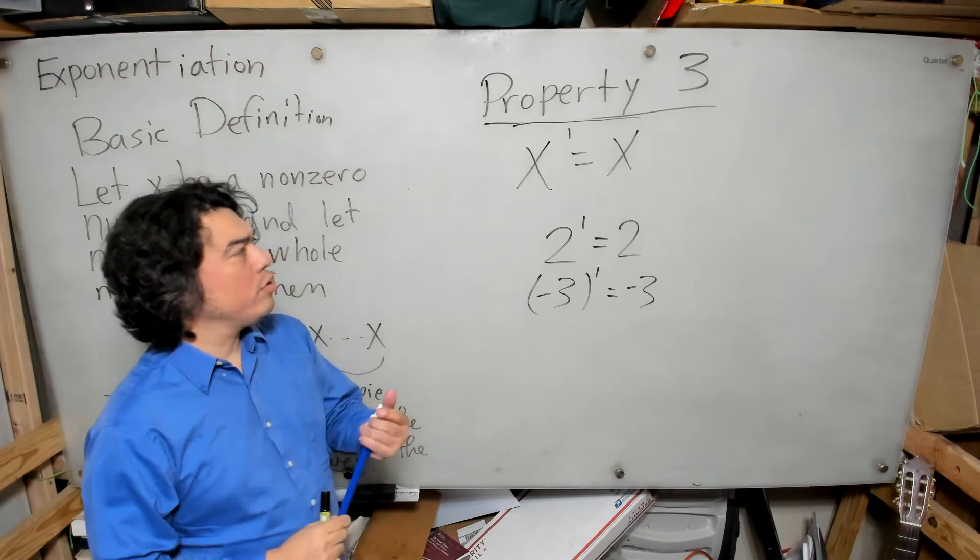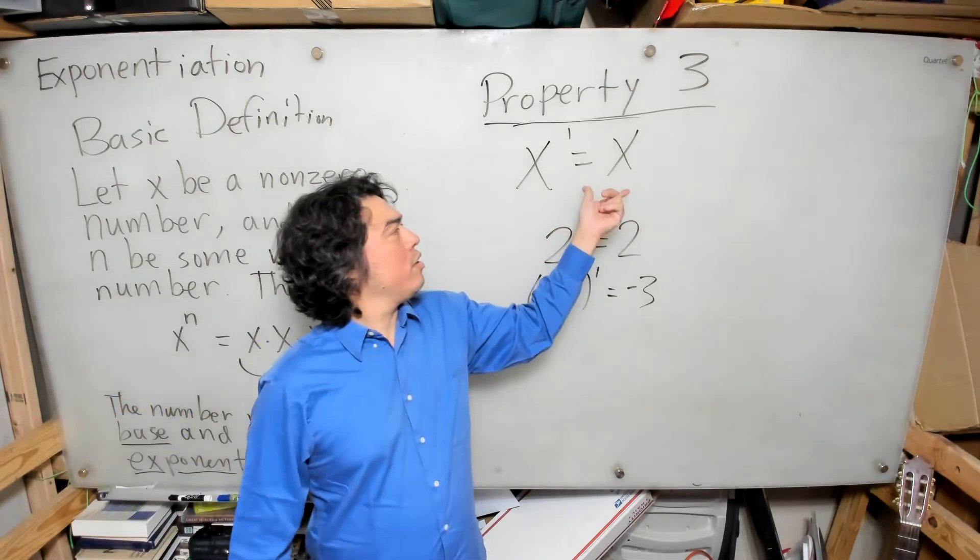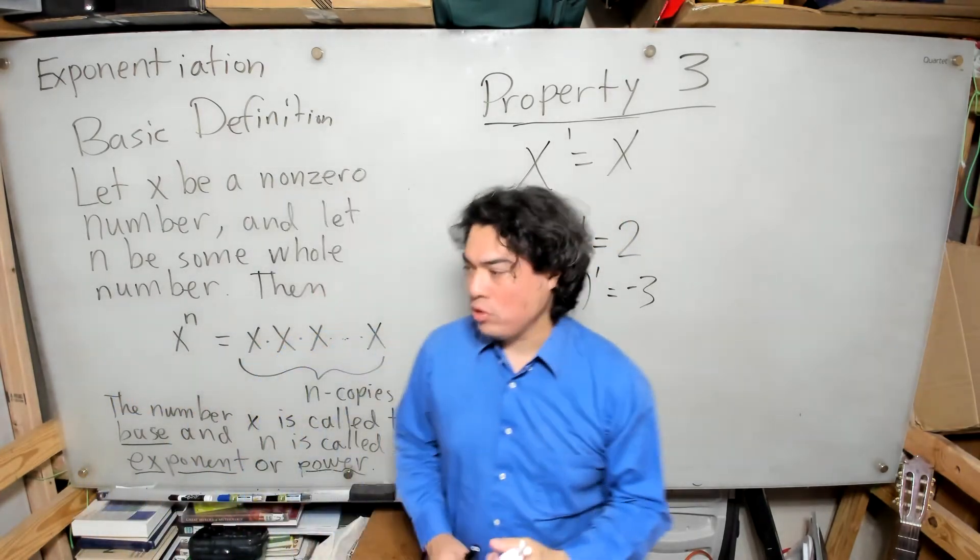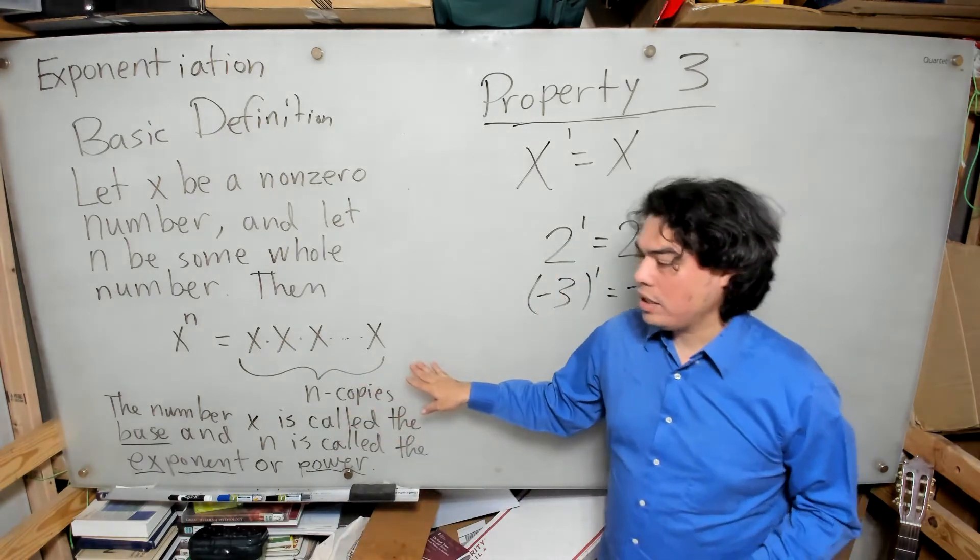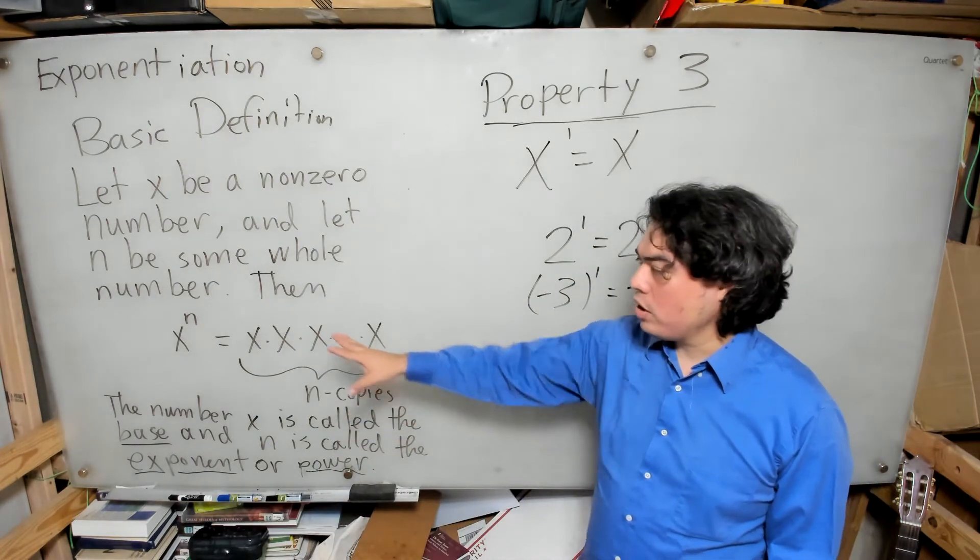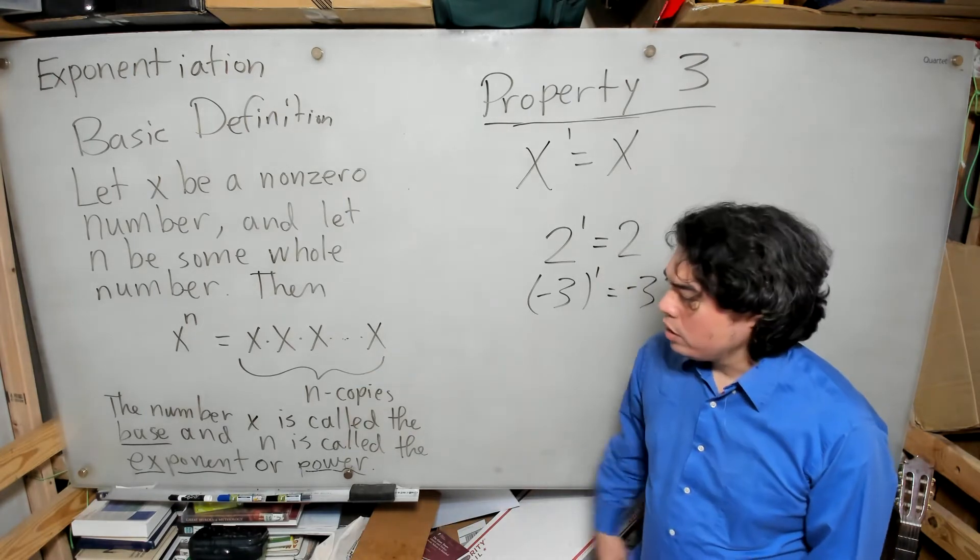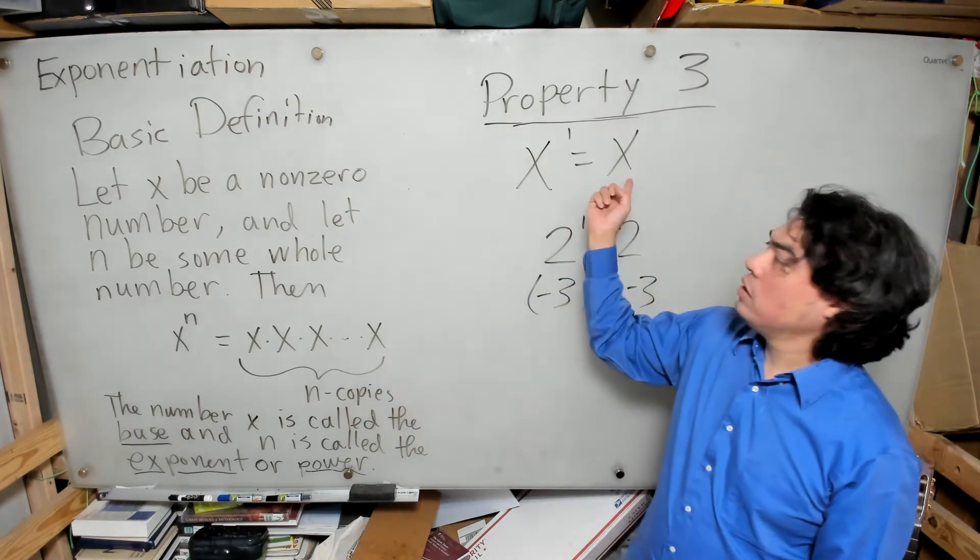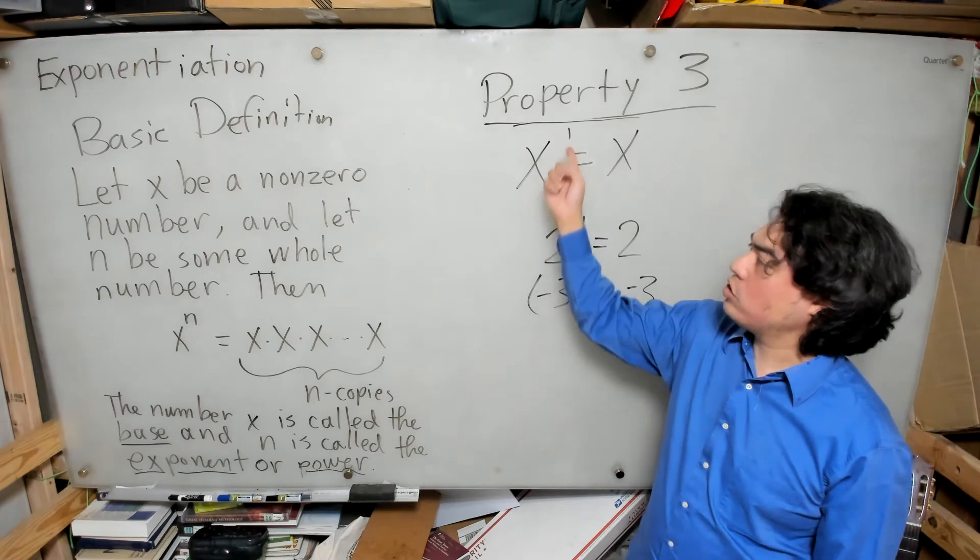And you can see here, this almost follows from the definition, right? The definition tells us that if we have n copies of x being multiplied together, then that's x to the n power. Here we have one copy of x, so it's just x to the 1 power.